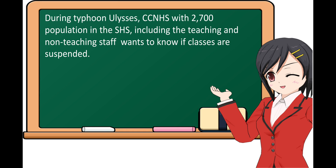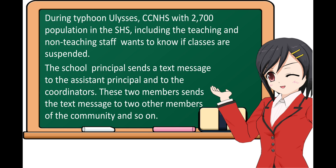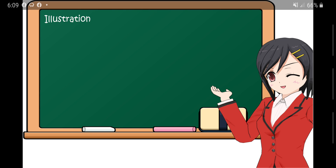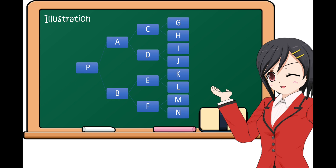Now let's try to analyze this scenario. During Typhoon Ulysses, CCNHS had 2,700 people in the senior high school, including teaching and non-teaching staff, who wanted to know if classes are suspended. The school principal sends a text message to the assistant principal and to the coordinators. These two members send the text message to two other members of the community, and so on. Here is the illustration of that scenario.